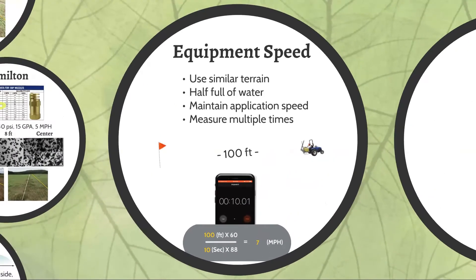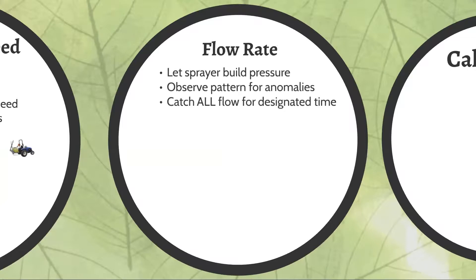The third variable you'll need to measure when calibrating is your nozzle's flow rate. This gets a little troublesome with a cluster or boomless nozzle — in the past I've seen folks try to bear hug a cluster nozzle with a trash bag to catch the volume. That's cumbersome, and I don't usually like grabbing something that's had a lot of chemistry through it.